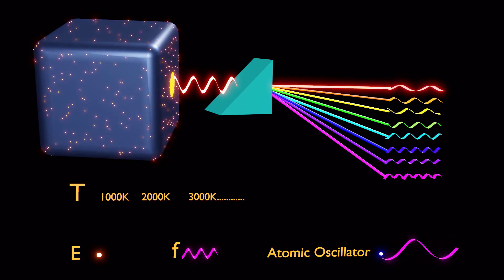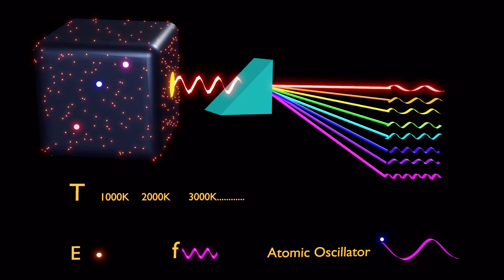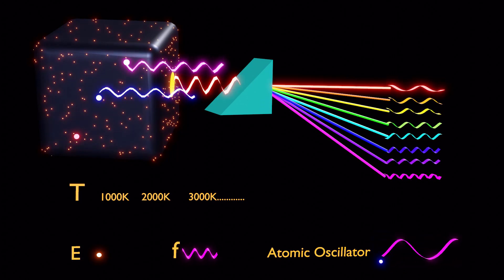According to classical physics, a black body is made up of countless atoms, each atom vibrates with its own frequency and amplitude, and emit radiation of corresponding frequency.